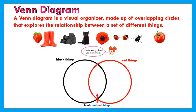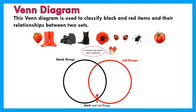A Venn diagram is a visual organizer made up of overlapping circles that explores the relationship between a set of different things. This Venn diagram is used to classify black and red items and their relationships between two sets.